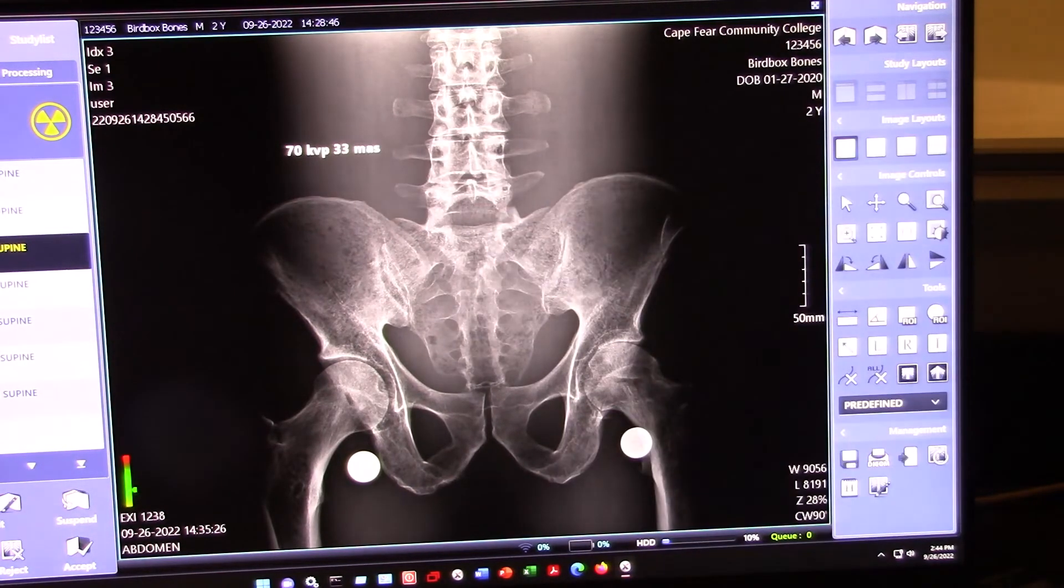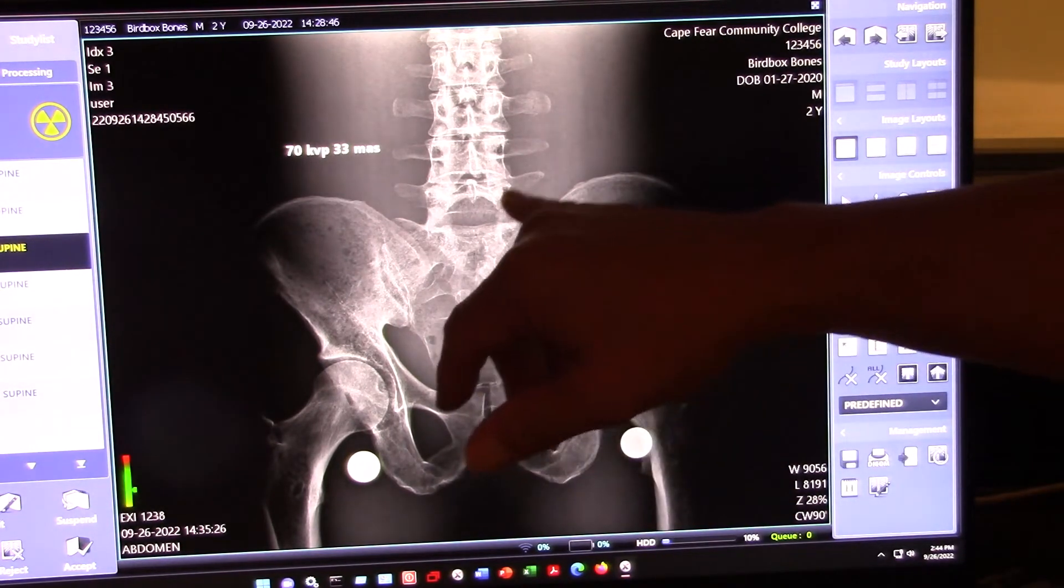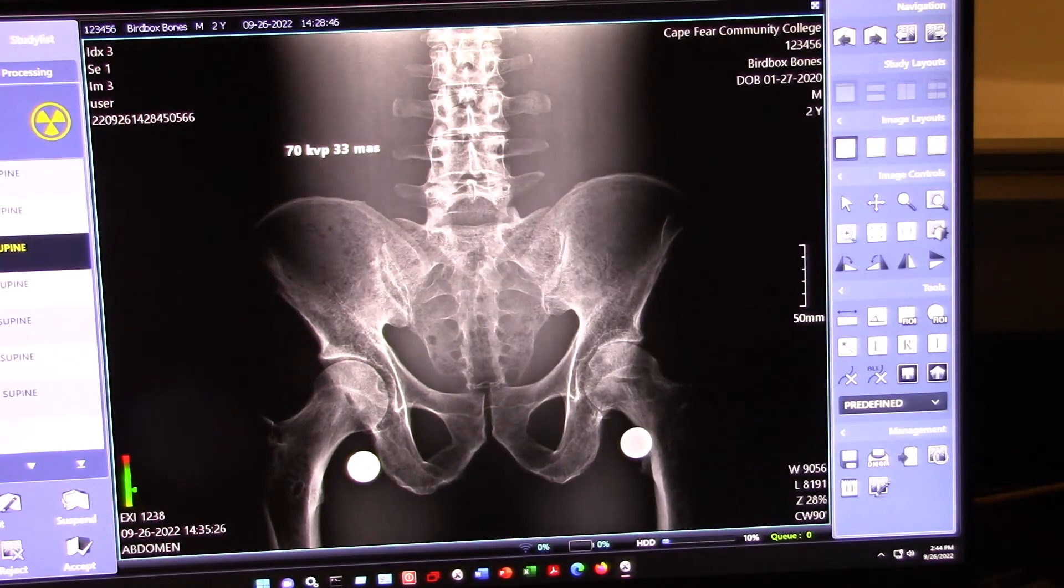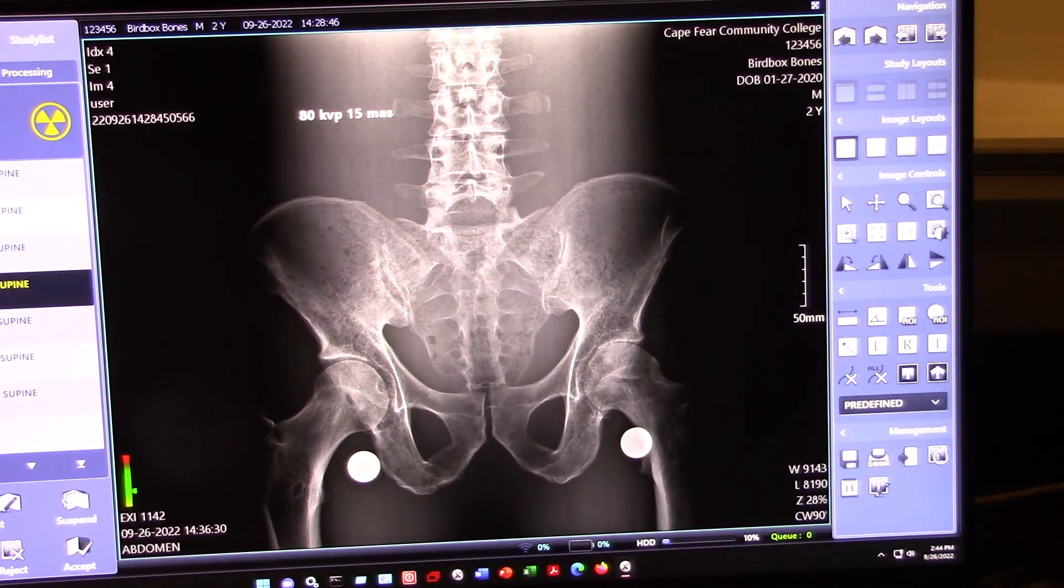Now, we increased the KVP to 70. So, what happened? Okay, well, our contrast is still pretty high. We dropped down to 33 mass. Remember, the AEC is taking care of this for us. We've still got good contrast. We can see where the bones start and stop. But as we start increasing,